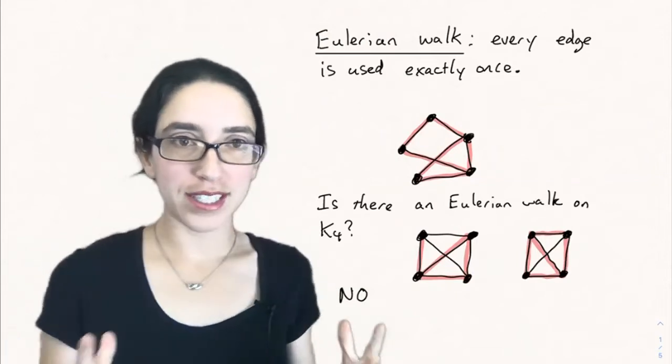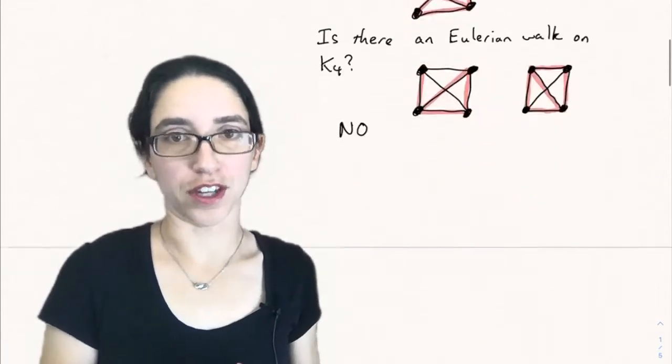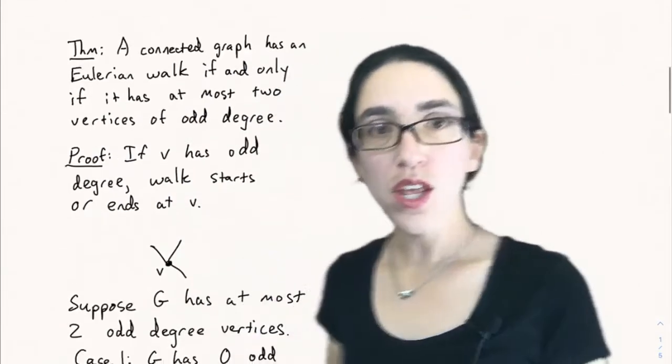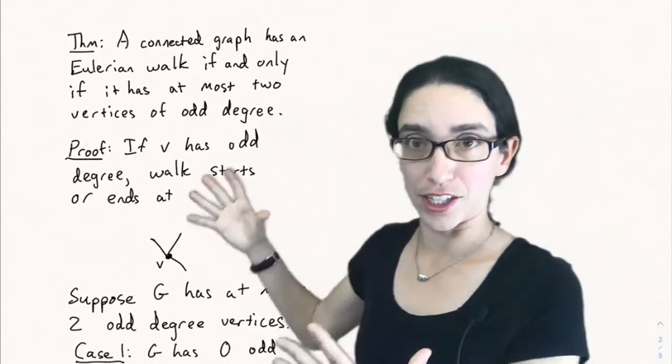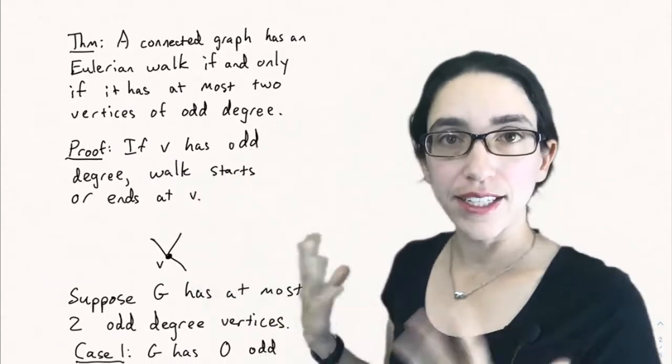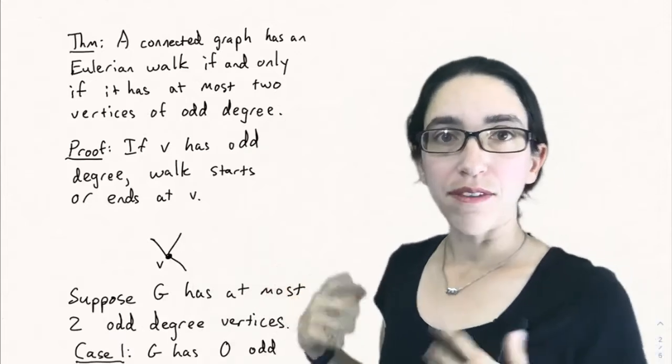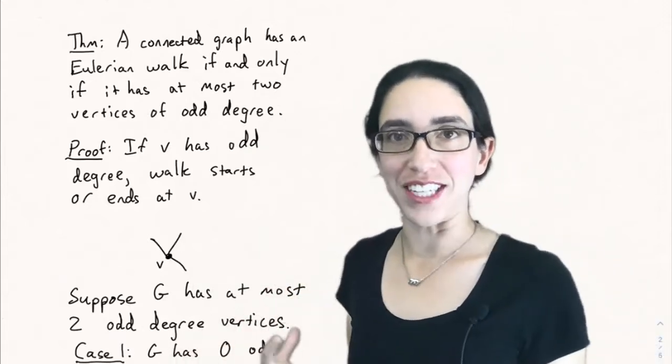So let's see what are some criteria for there to be an Eulerian walk. We actually know a necessary and sufficient condition for an Eulerian walk to exist. A connected graph has an Eulerian walk if and only if it has at most two vertices of odd degree.